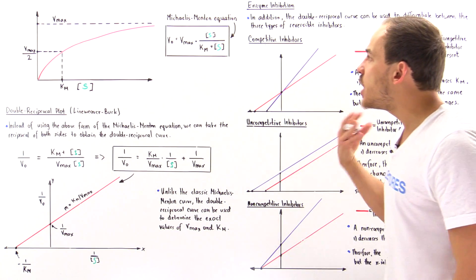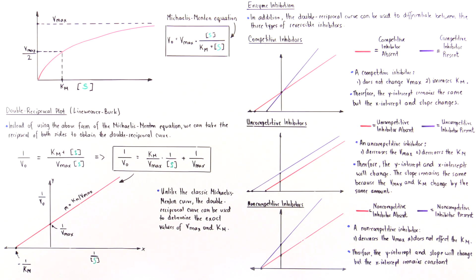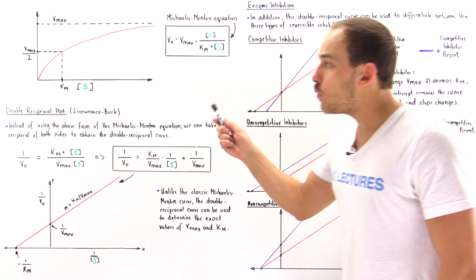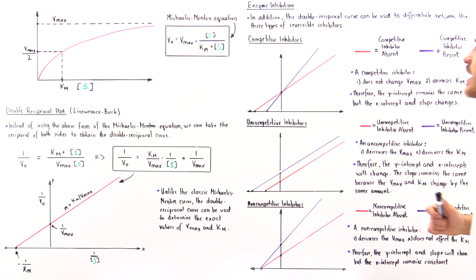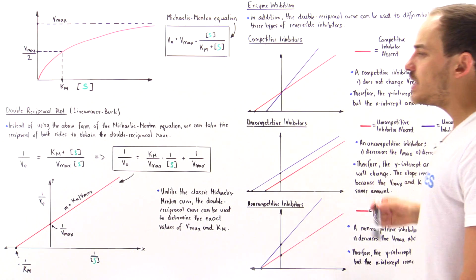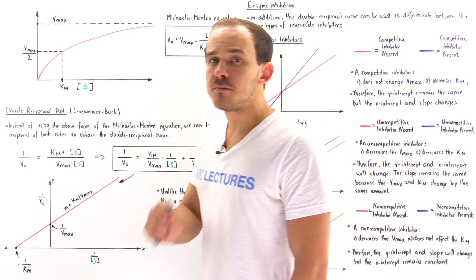And so this is another very useful and very important application of how we can use the double reciprocal plot, also known as the Lineweaver-Burk curve, to basically differentiate between the three types of reversible inhibitors.